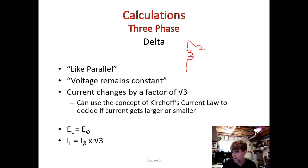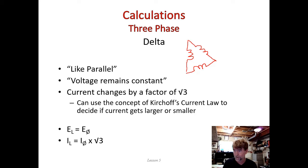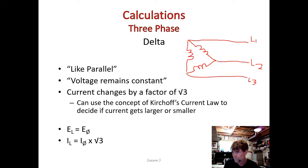I'm going to draw a delta connection. Here's our first coil of wire, here's our second coil of wire, and here's our third coil of wire — connected together. If those were vectors, they'd be placed tip to tail. From the top point we come out and call this line one, from this point here call it line two, and from this point call it line three. There's our delta connection with three phases and three lines.